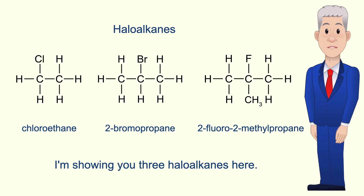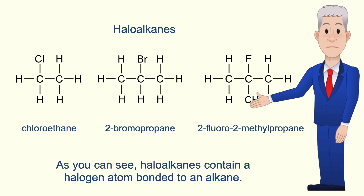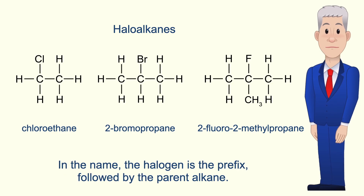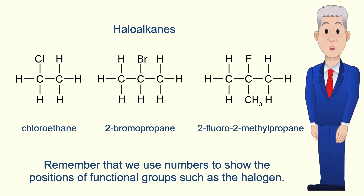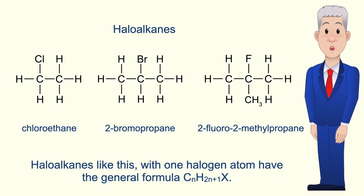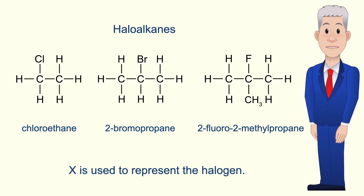Here are three haloalkanes. As you can see, haloalkanes contain a halogen atom bonded to an alkane. In the name, the halogen is the prefix followed by the parent alkane, and we use numbers to show the positions of functional groups such as the halogen. Haloalkanes with one halogen atom have the general formula CnH2n+1X, where X represents the halogen.